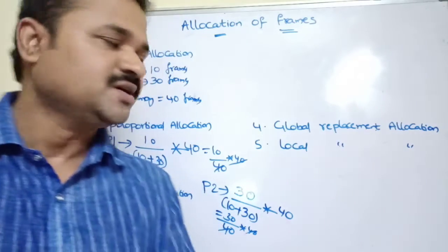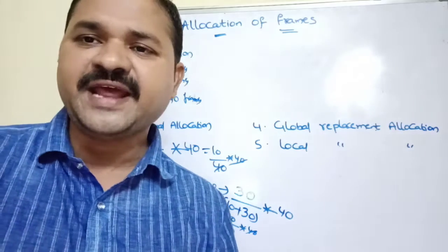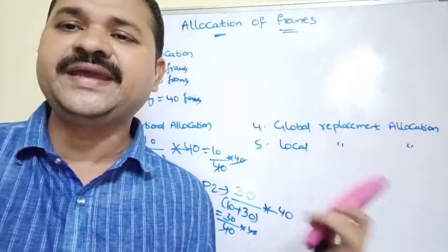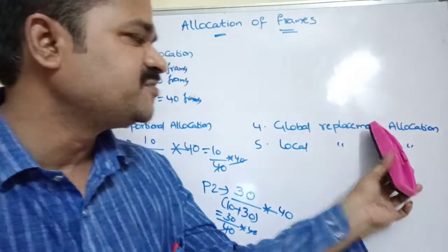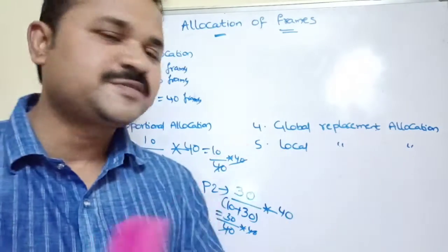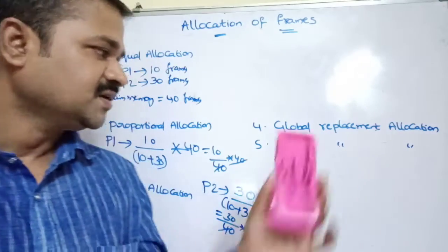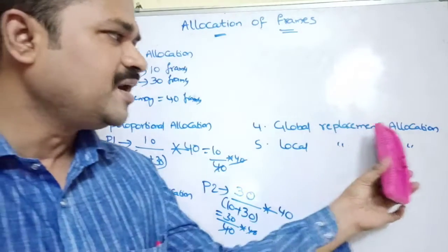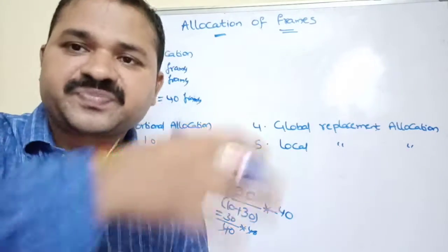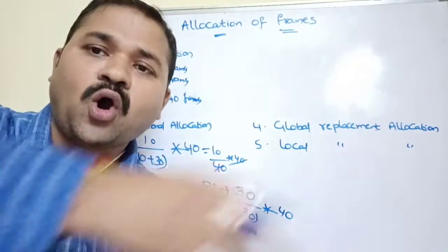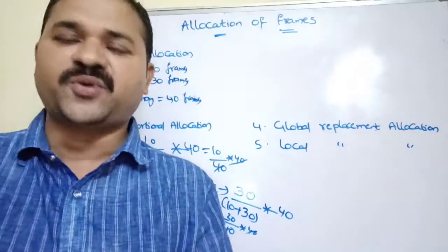So which page do we have to replace? That should be done with the help of various replacement algorithms like FIFO, OPT, and LRU. All those algorithms come under either global replacement allocation or local replacement allocation. In global replacement allocation, a process is allowed to select a frame from the list of all the frames, even though that frame is allocated to some other process.